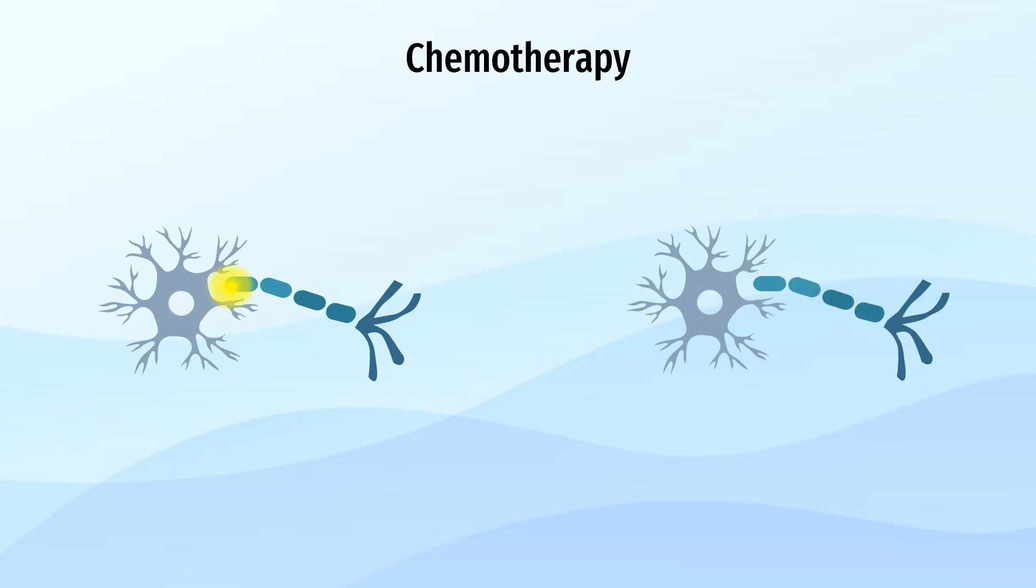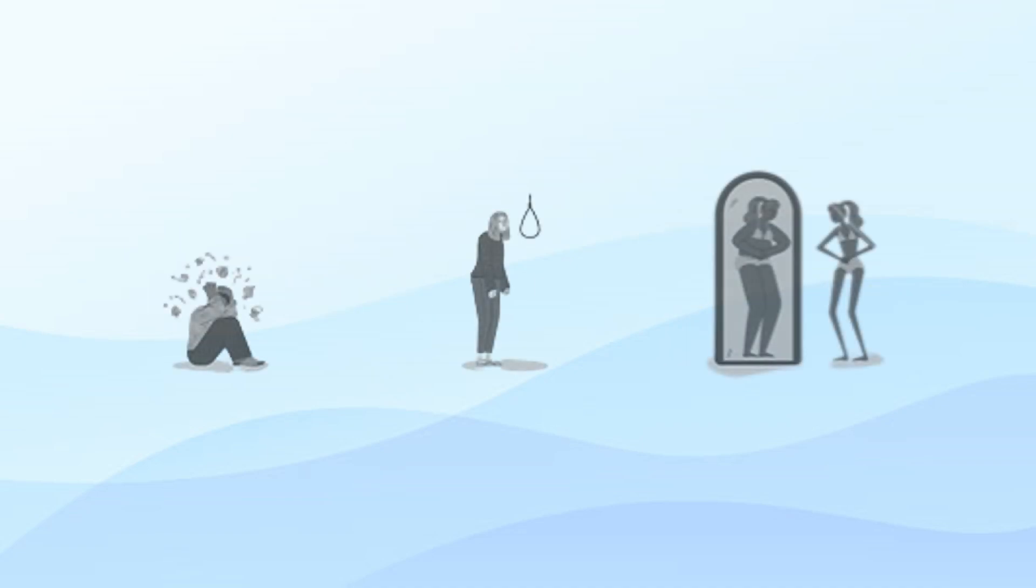Unfortunately, chemotherapy can impede the release and uptake of certain neurotransmitters, such as serotonin and dopamine. This disruption in neurotransmitter balance can lead to a range of issues, including depression, anxiety, and eating disorders.